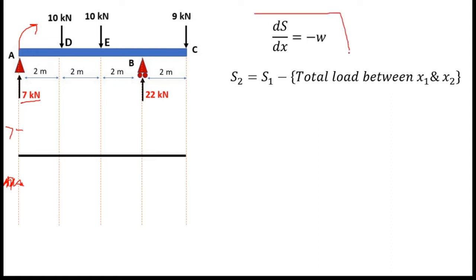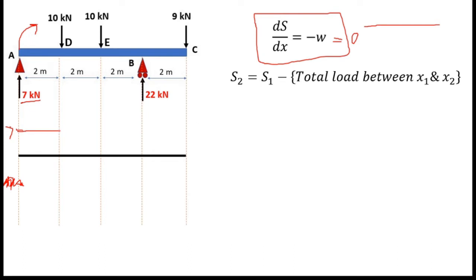So our value is plus 7, and I can delete the minus value. Now, what about the shape? The shape of the shear force diagram is obtained using the slope relationship: slope of SFD equals minus distributed load. Since there are no distributed loads on this beam, the slope is zero — a horizontal straight line. For the AD segment, the shear force diagram is a horizontal line at plus 7 kN.